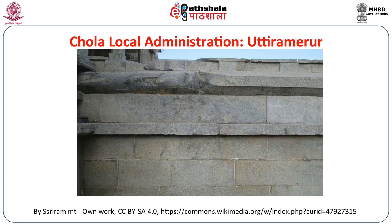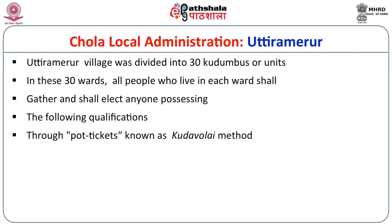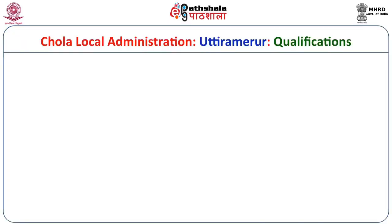This is another image showing the long inscription. Uttaramirur village was divided into 30 kudumbus or units. In each of these 30 wards, several people lived; all of them would gather and select one person possessing certain qualifications through the kudavolai or pot-ticket method. In a sense, it is democratic in the process of consultation rather than one person deciding on their own — a consensus arrived at by discussing with all members of a particular kudumbu or unit. What are the qualifications to be elected as a member of this committee?